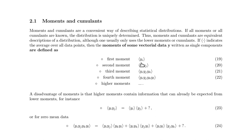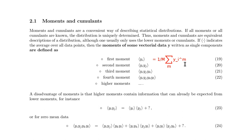The first moment is simply the average over a component. The second moment is the average over the product of two components. The third is the average over the product of three components, and the fourth moment is the average over four components. The angular brackets indicate an averaging process: we sum over the M data points the component Y_i of the signal Y, and divide by M.